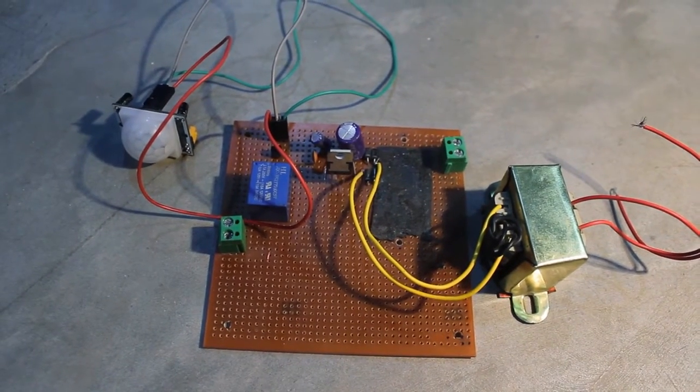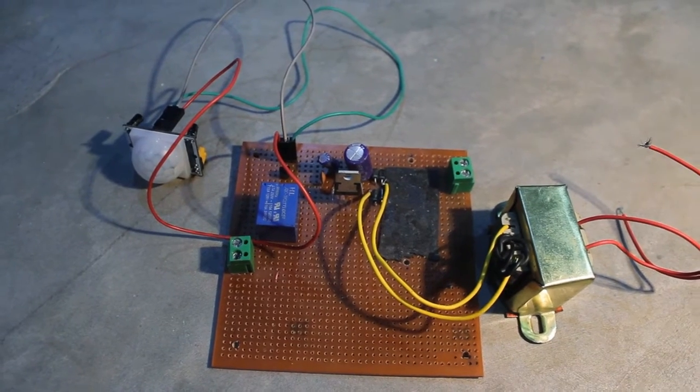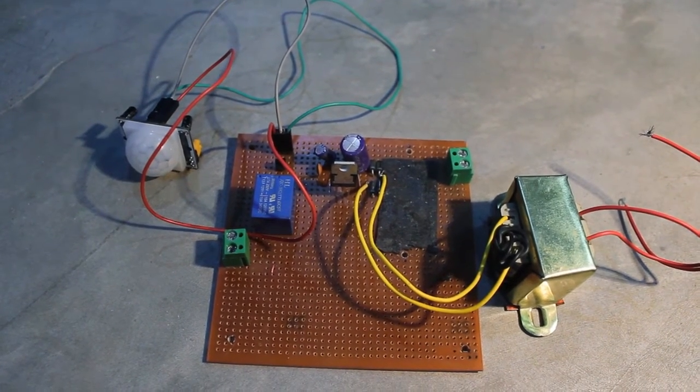Welcome you guys, this is VJ from Electronic Terminal. Today we are going to see a simple circuit called automatic room light. You don't need any controllers for this circuit because I have used only one transistor.